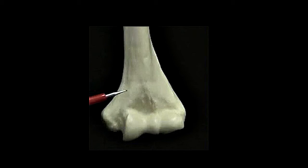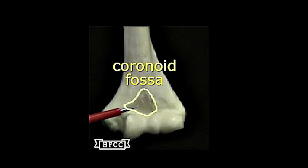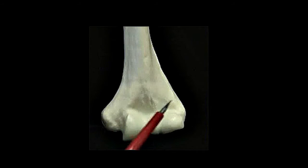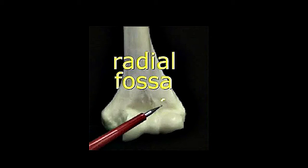And then, to look at this fossa or indentation, the coronoid fossa, there are two of them on this anterior view. And the other smaller one, less noticeable, is the radial fossa, for the radial bone.